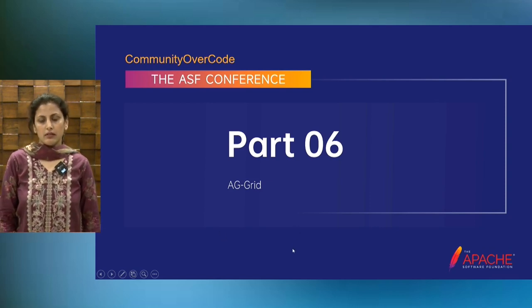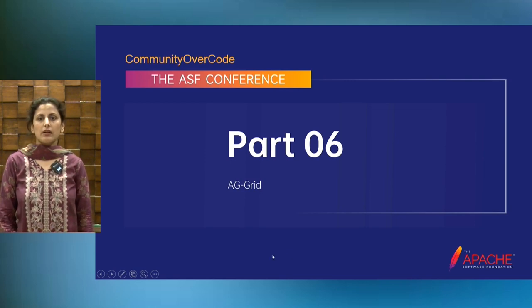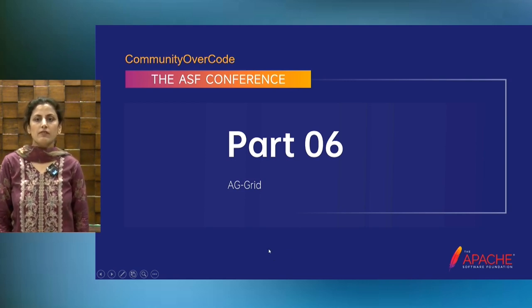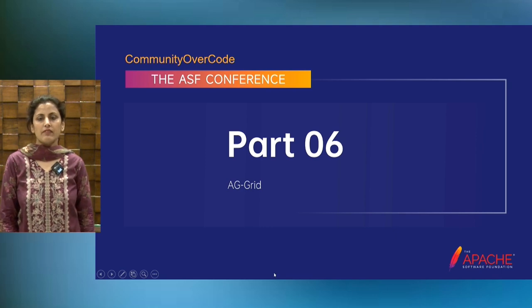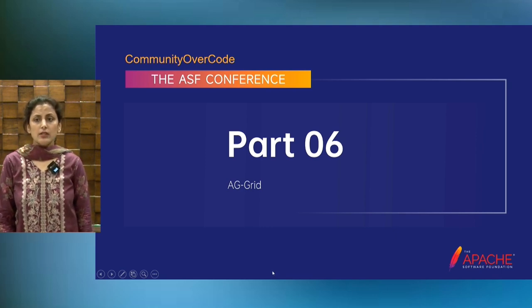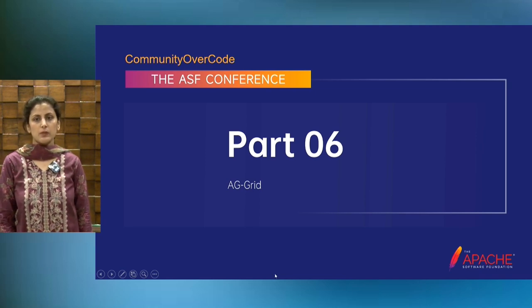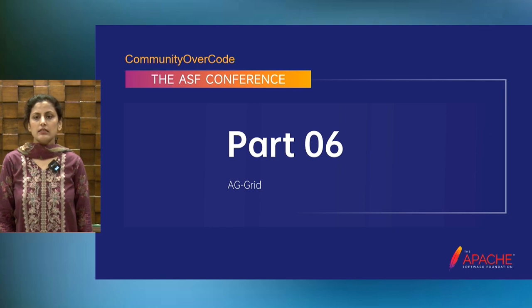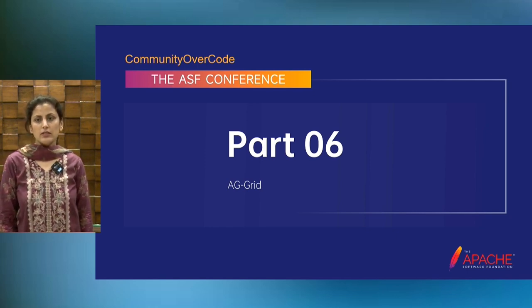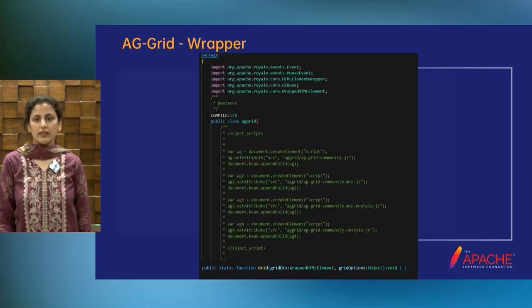AgGrid is again a wrapper library. AgGrid is a cutting-edge JavaScript library that empowers developers to build feature-rich and high-performance data grids effortlessly. With AgGrid, you are not just creating tables — you are creating dynamic, interactive, and user-centric data experiences. It's a powerhouse revolutionizing the way to handle tabular data. Imagine your application dealing with vast amounts of data that need to be presented, filtered, sorted, and manipulated in a user-friendly and effective manner — that's where AgGrid comes into play.